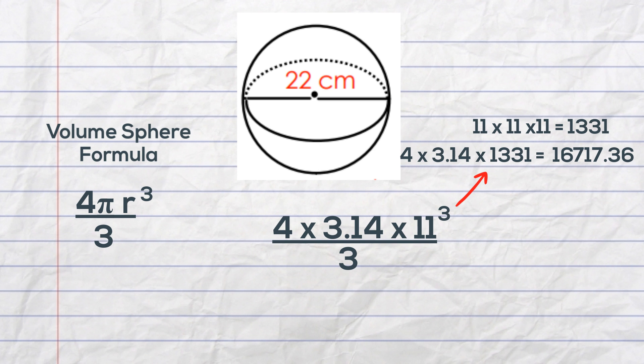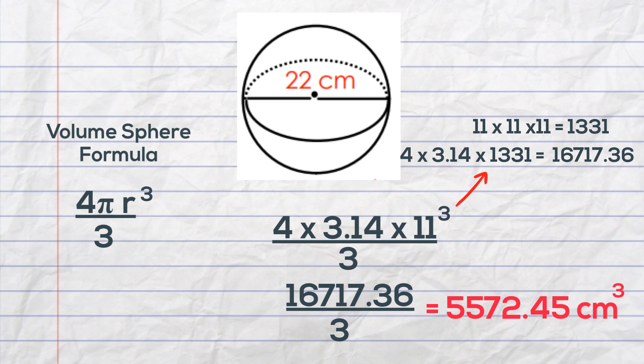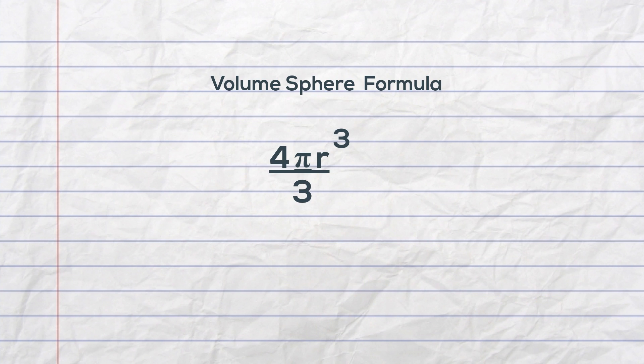And then 16,717.36 divided by 3 and there's the final answer. So pretty simple. Just use the formula four-thirds pi r cubed to find the volume of a sphere.